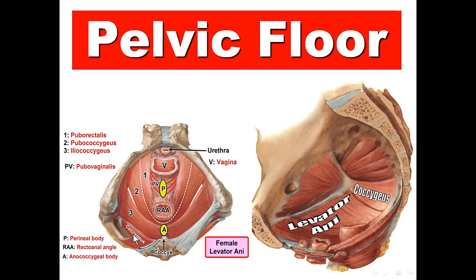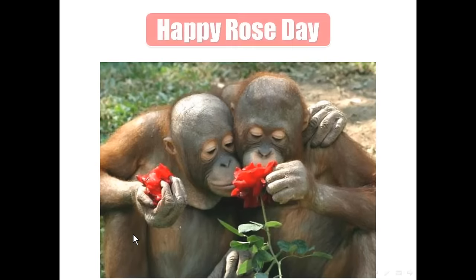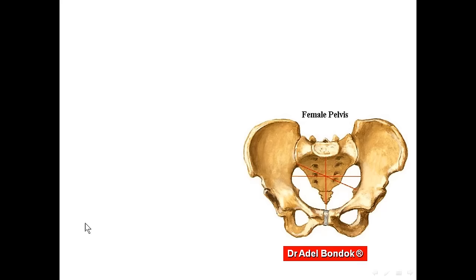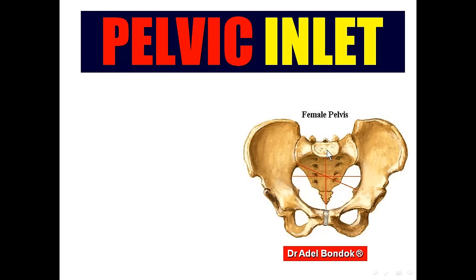The coccygeus is a rudimentary muscle in man. Now, having finished with the wall of the pelvis, let us talk about the pelvic cavity. The pelvic cavity has an inlet and an outlet, and between the inlet and outlet there is a space.